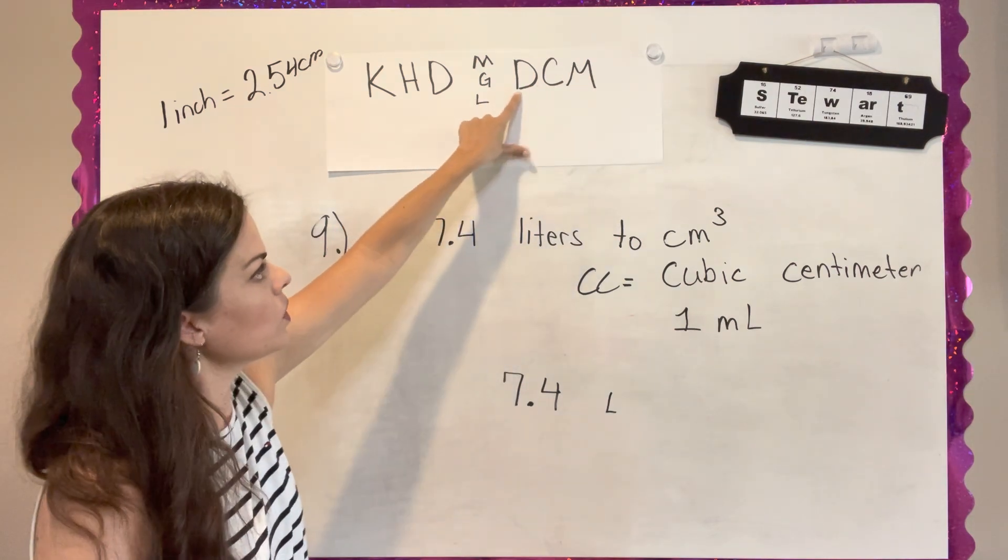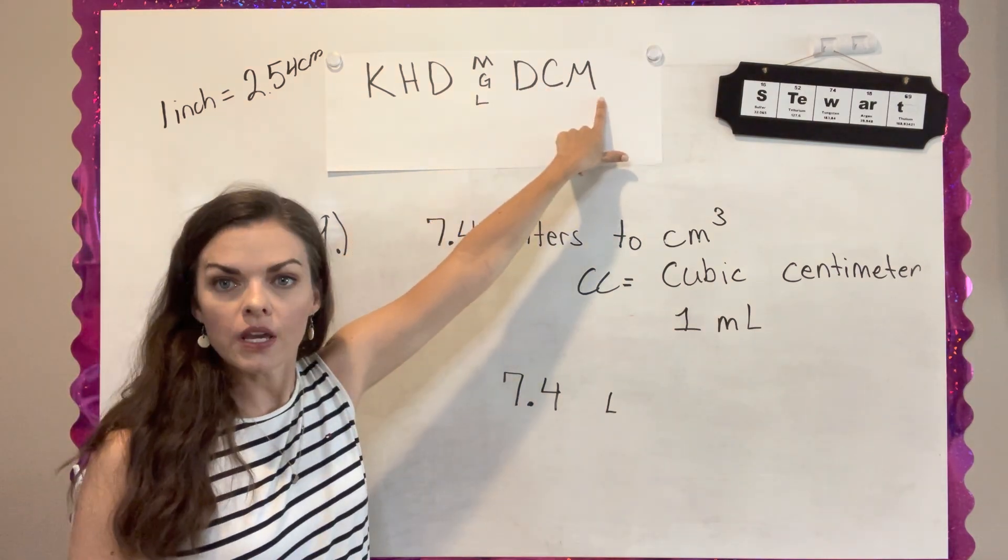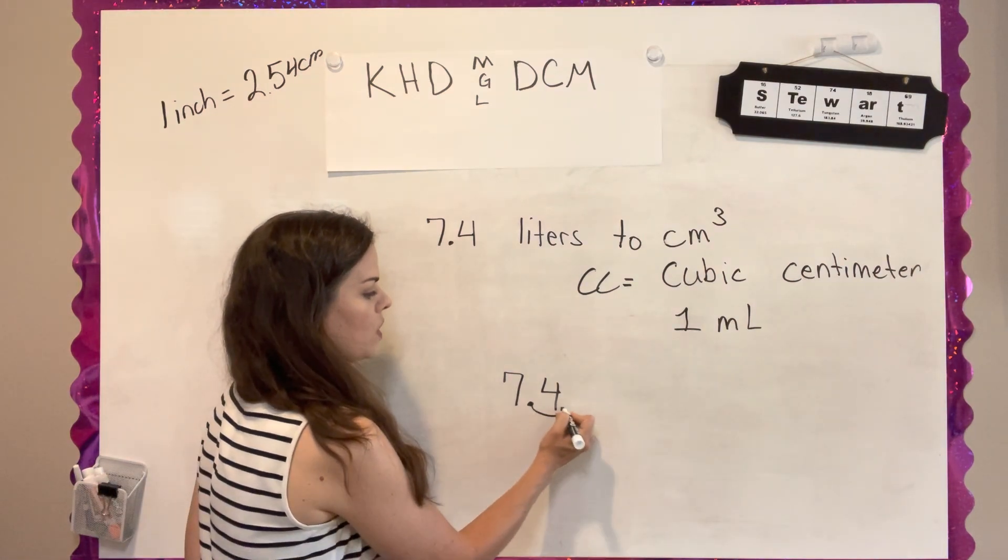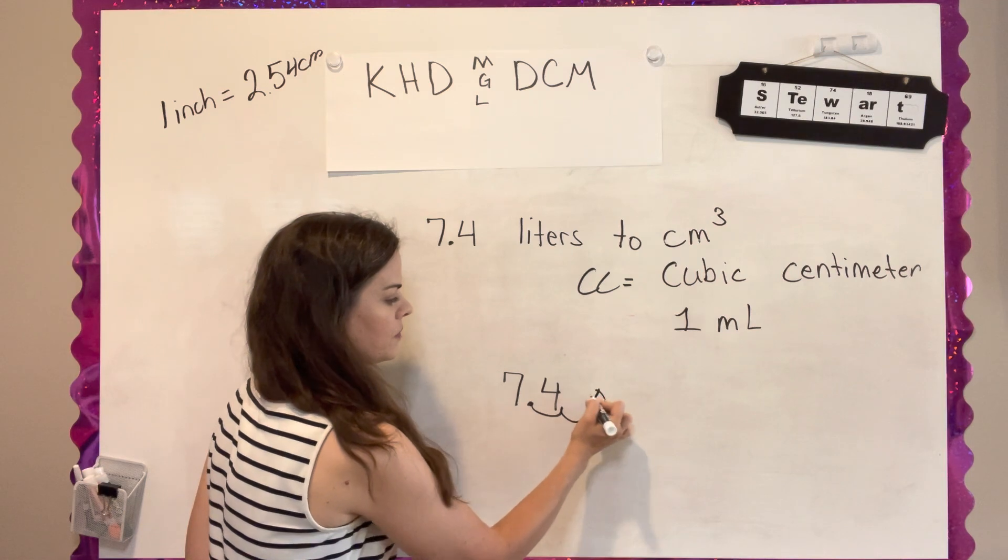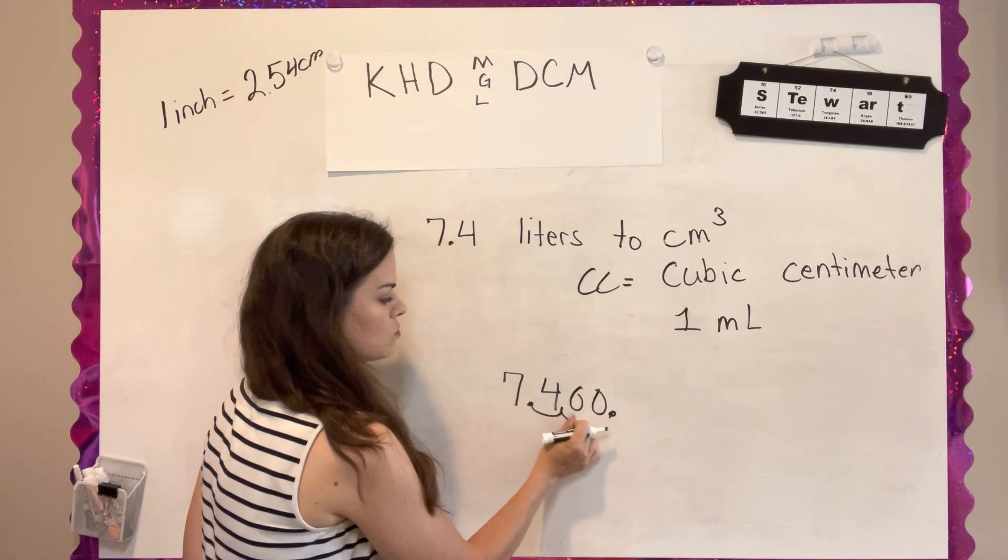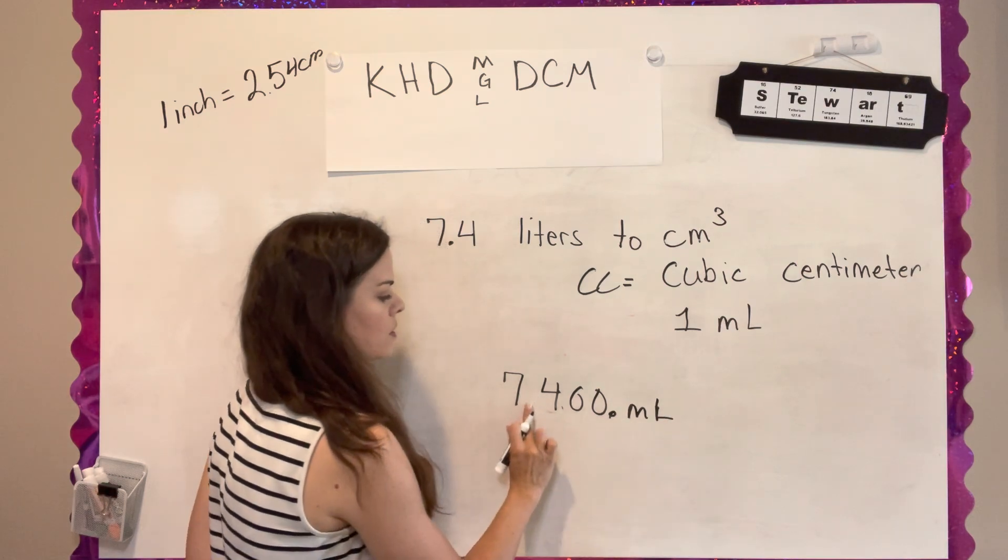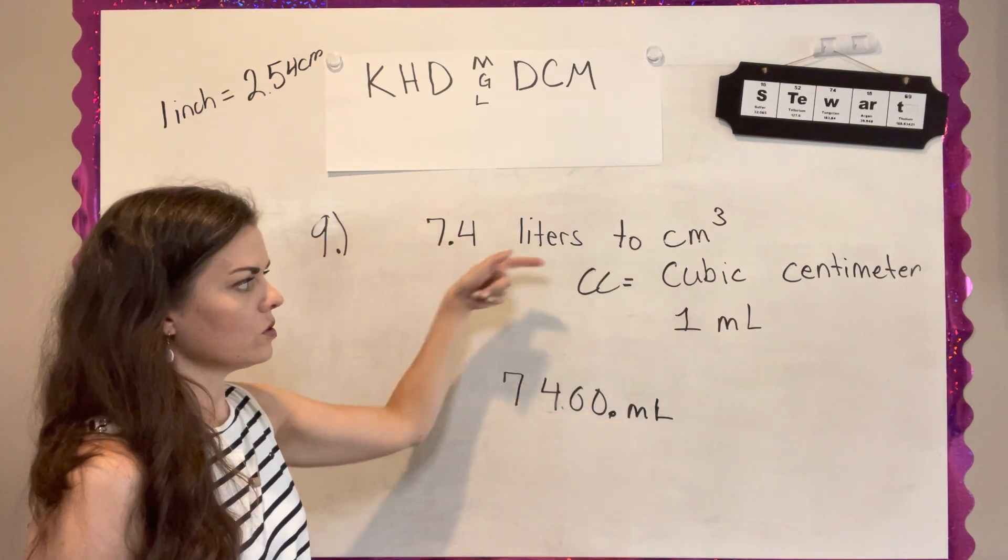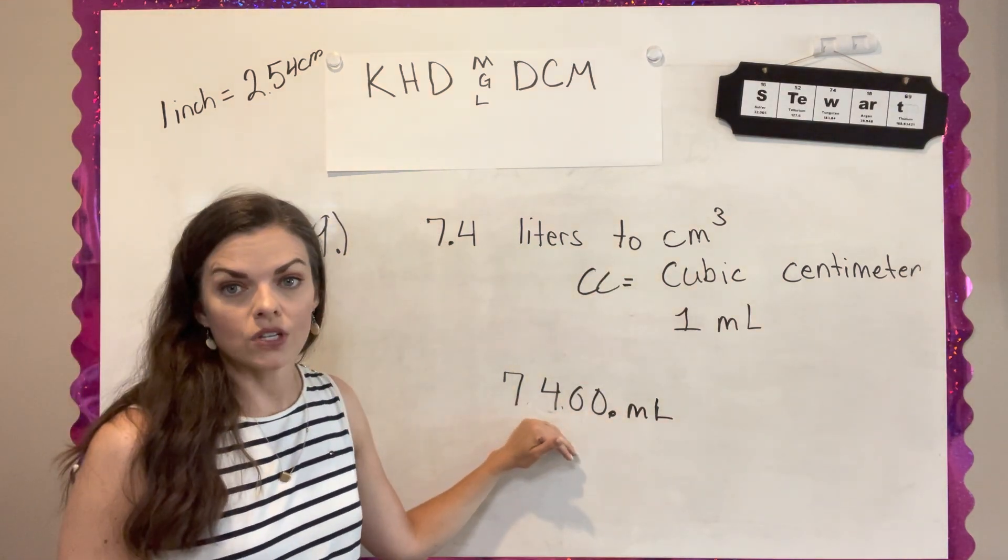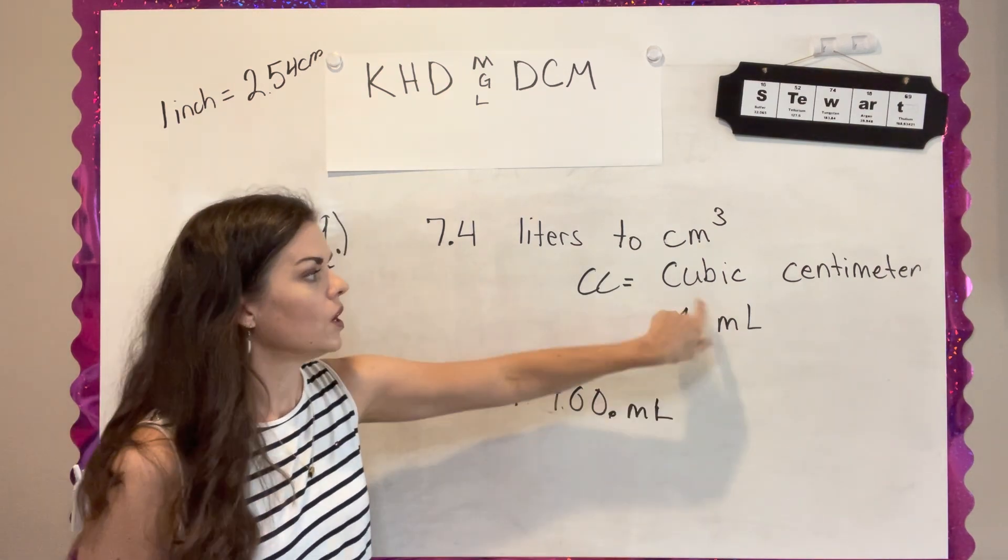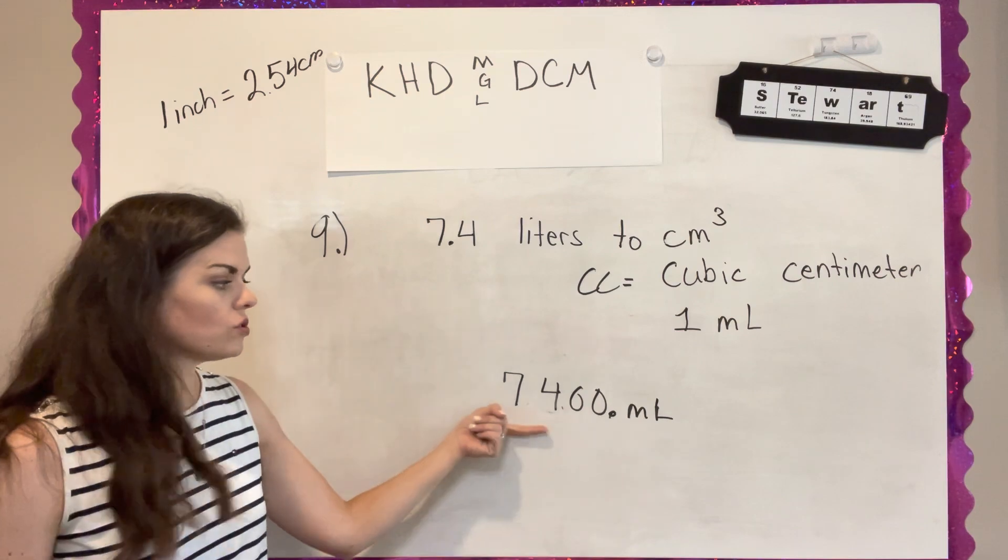I'm jumping 1, 2, 3 hops to the right. So you're going to take your decimal and you're going to move it 1, 2, 3 this way, and just fill it in. So 7.4 liters is 7,400 milliliters or 7,400 cubic centimeters. So your answer is 7,400.